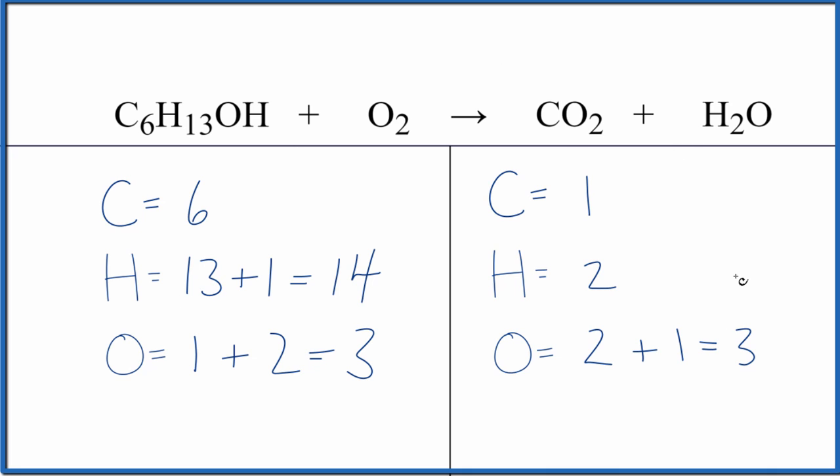So I've counted all the atoms up already. The thing to really watch for is you have 13 hydrogens here and one here. 13 plus 1, that's 14. And then oxygens, you have 1 plus 2. That gives us 3 oxygens.